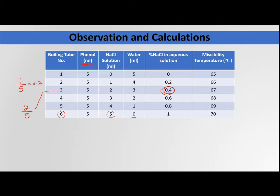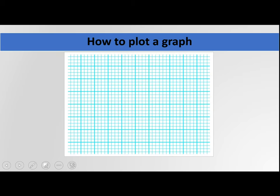In the last tube, 5 mL of sodium chloride solution is added with no pure water, giving a concentration of 5 mL divided by 5 mL total = 1%. So this is how the percent sodium chloride in the aqueous solution is calculated. The miscibility temperature is recorded from the experimental system. These hypothetical values are given just to prepare the graph. On the graph, the y-axis is the critical solution temperature and the x-axis is the percent sodium chloride in the aqueous phase.